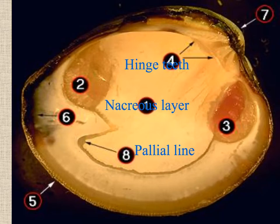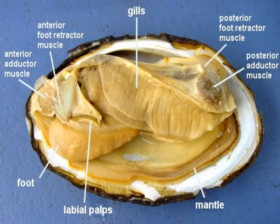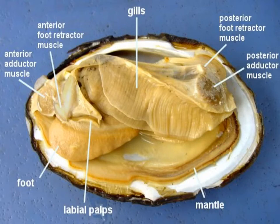The paleo line is where the mantle of the clam attaches. You will see various muscle scars on the clam shell. With the clam muscle itself, you will see the gills, the mantle, and some adductor muscles. You will find the heart up in this region, and then you would see the foot.